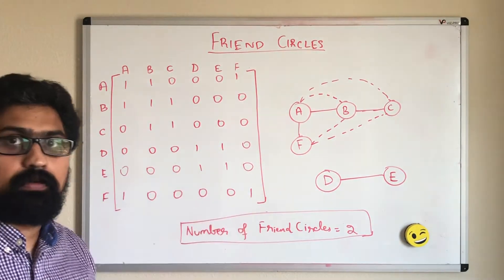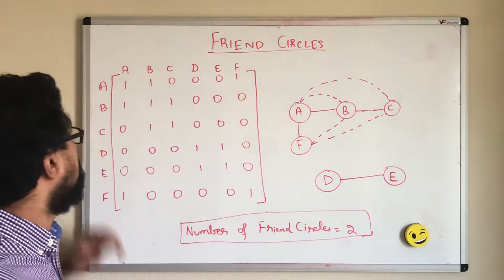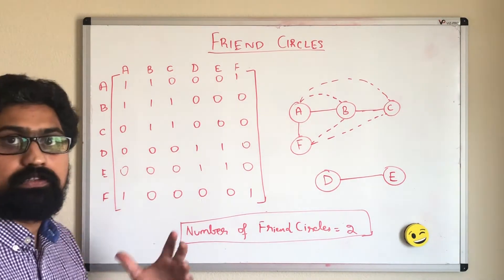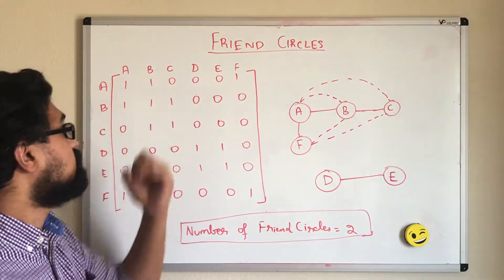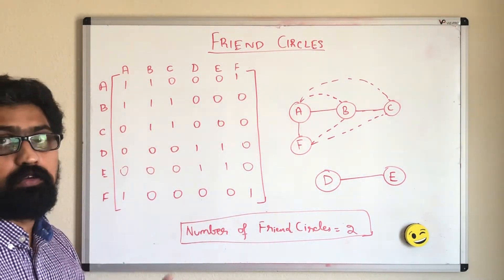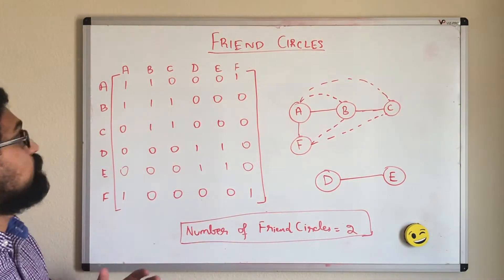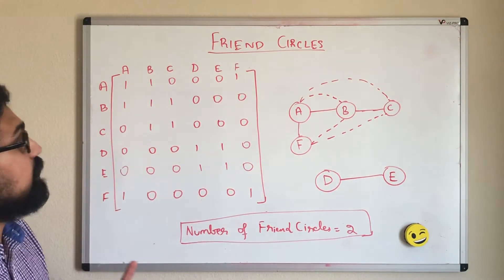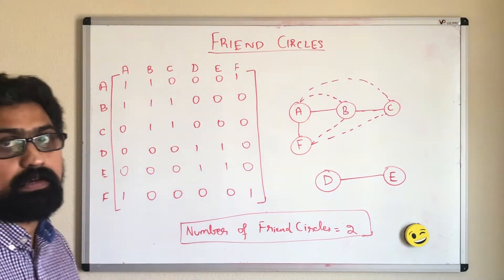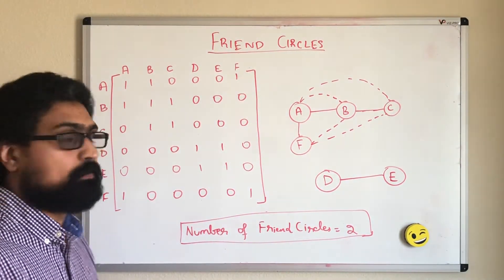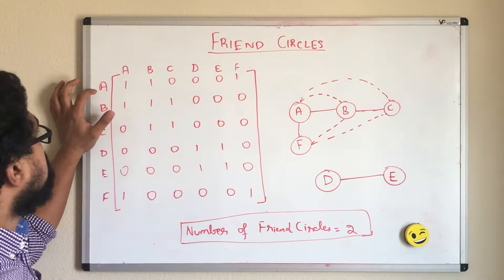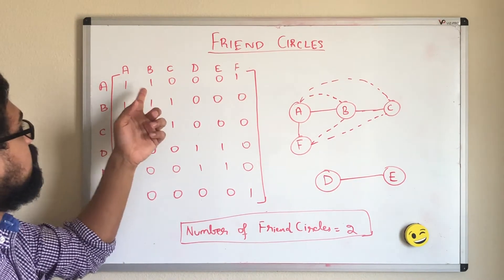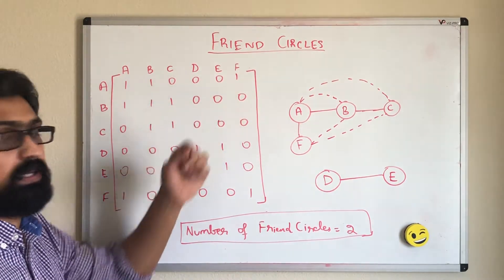First, let us try to understand the problem statement. We are given a 2D matrix consisting of 1s and 0s. A 1 tells us that 2 people are direct friends with each other. A 0 tells us that 2 people are not friends with each other. For example, here person A is friends with himself, B and person F.